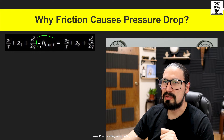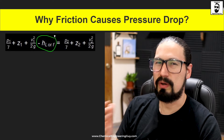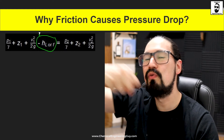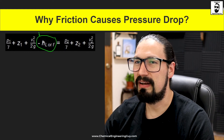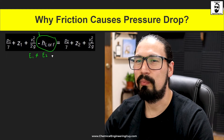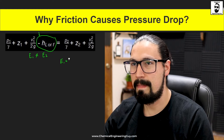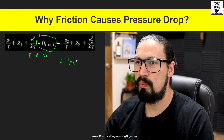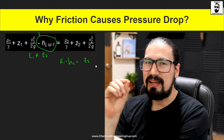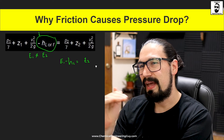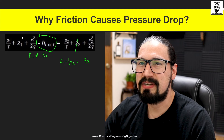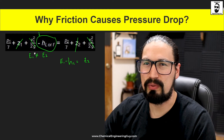The friction loss term HL carries a negative sign, meaning it removes energy from the system. So energy one is no longer equal to energy two — we must account for friction loss. As you can see, energy one is significantly higher than energy two. In this case we have the same height, same diameters, and same volumetric flow rate throughout.